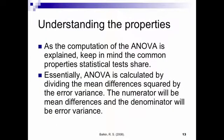So we're going to be taking a look soon at how we compute an ANOVA. And keep in mind these common properties statistical tests share. Essentially, an ANOVA is going to be calculated by dividing mean differences squared by error variance. And remember, variance is the squared value of the standard deviation. So we're talking about squared values here. All right, the numerator will be mean differences and the denominator will be error variance. Okay, so that concludes our ANOVA theory. And next we'll move on to calculating a one-way ANOVA.